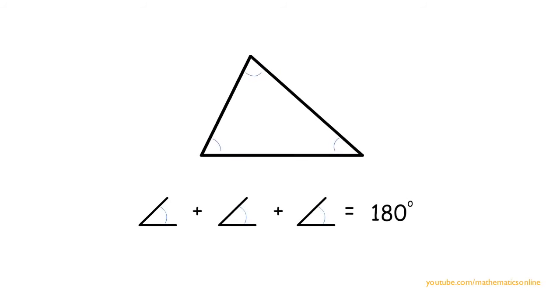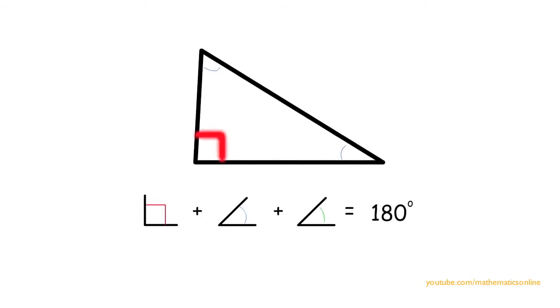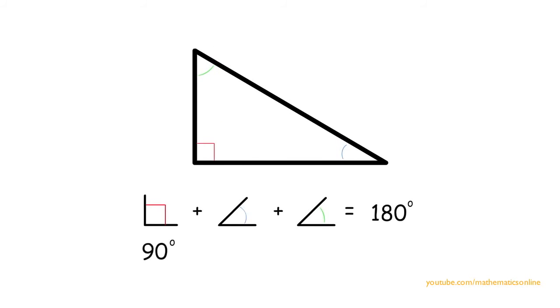When we have a right triangle, we have an angle that is always 90 degrees. So the remaining two angles must add up to 90 degrees to have a total of 180 degrees.